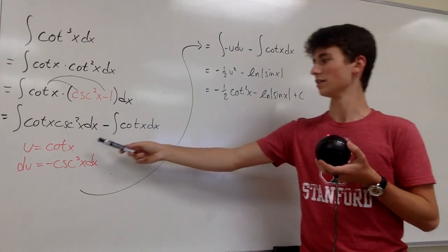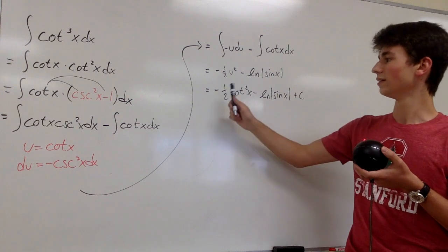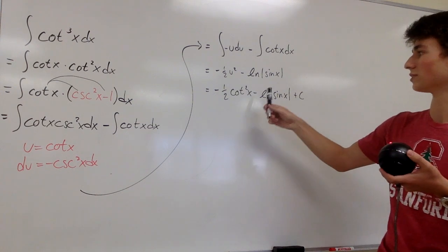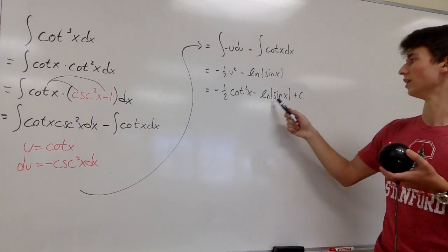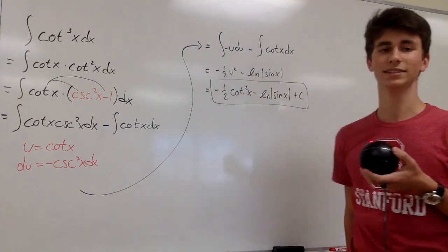And we can plug cotangent of x back into where u here to end up with the final answer of negative one half cotangent squared of x minus natural log of sine of x plus c. And that's it.